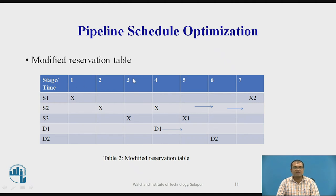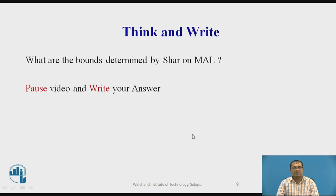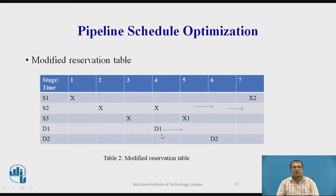This is the modified reservation table by considering the delay. D1 and D2 are introduced here, so we now have stages S1, S2, S3 and delays D1 and D2. This forms the new reservation table based on the introduction of delay as seen in the previous diagram. This delay leads to a new collision vector.